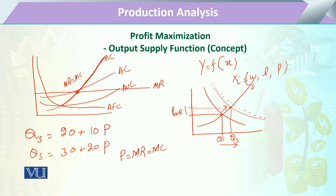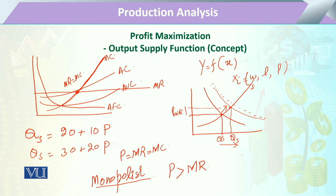If the firm is not a perfectly competitive firm but rather a different type of firm, there will be a difference in the supply function. For a monopolist firm, the price is always greater than its marginal cost, and marginal cost must equal marginal revenue. Therefore, there will be a difference in the output supply function compared to a perfectly competitive market.